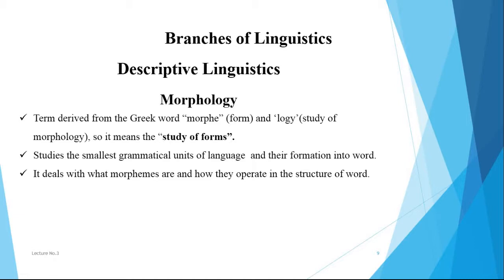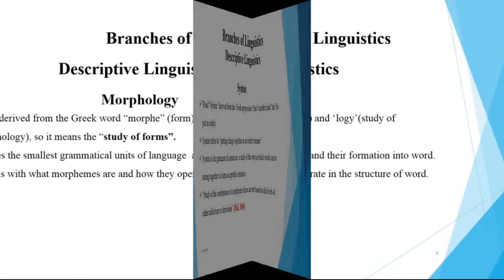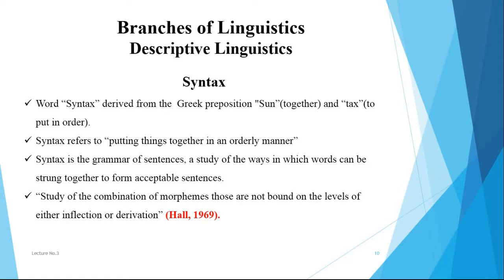The third area in descriptive linguistics is morphology, derived from the Greek word 'morph,' meaning form, and 'logi,' meaning the study of. So morphology means the study of forms. It studies the smallest grammatical units of language and their formation into words, dealing with what morphemes are and how they operate in the structure of words.